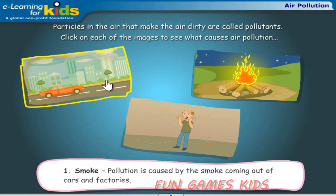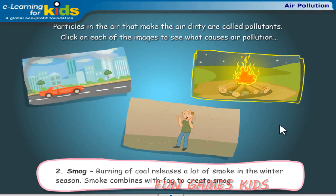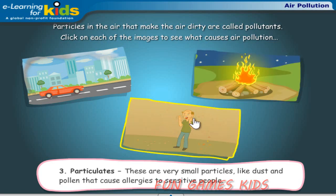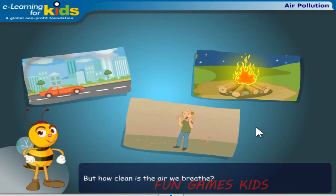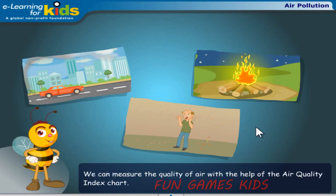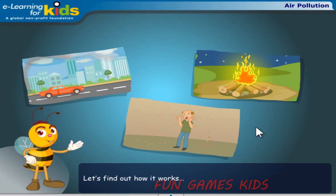Pollution is caused by the smoke coming out of cars and factories. Smog: burning of coal releases a lot of smoke in the winter season, and smoke combines with fog to create smog. Particulates are very small particles like dust and pollen that cause allergies to sensitive people. But how clean is the air we breathe? We can measure the quality of air with the help of the air quality index chart. Let's find out how it works.